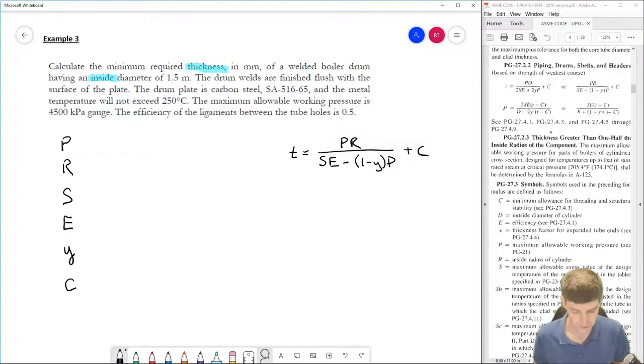Let's see what we know from our problem. So my pressure, 4,500 kPa gauge, gauge is good, kPa is not, so if I convert that to my correct units, 4.5 megapascals.